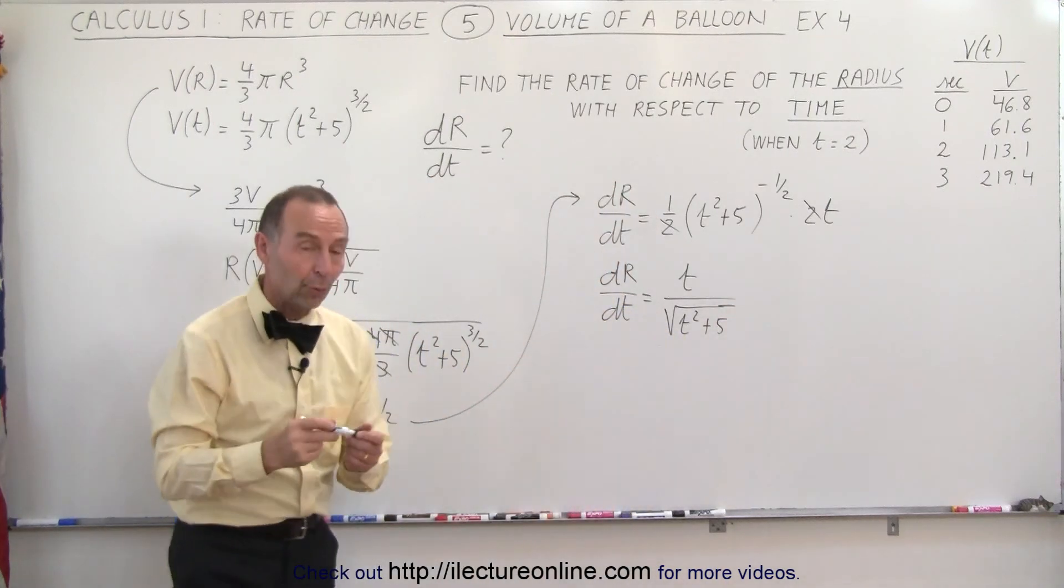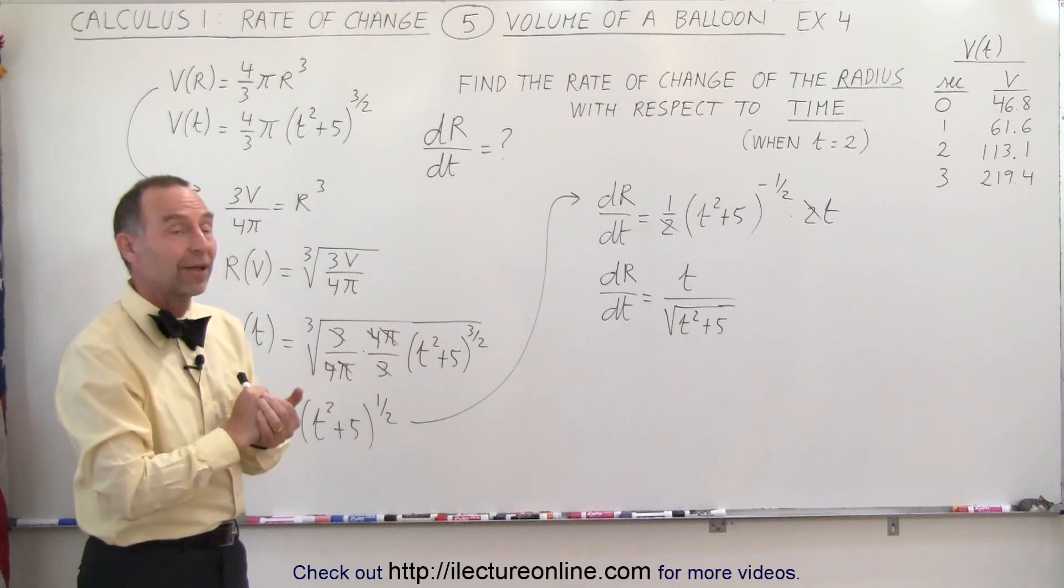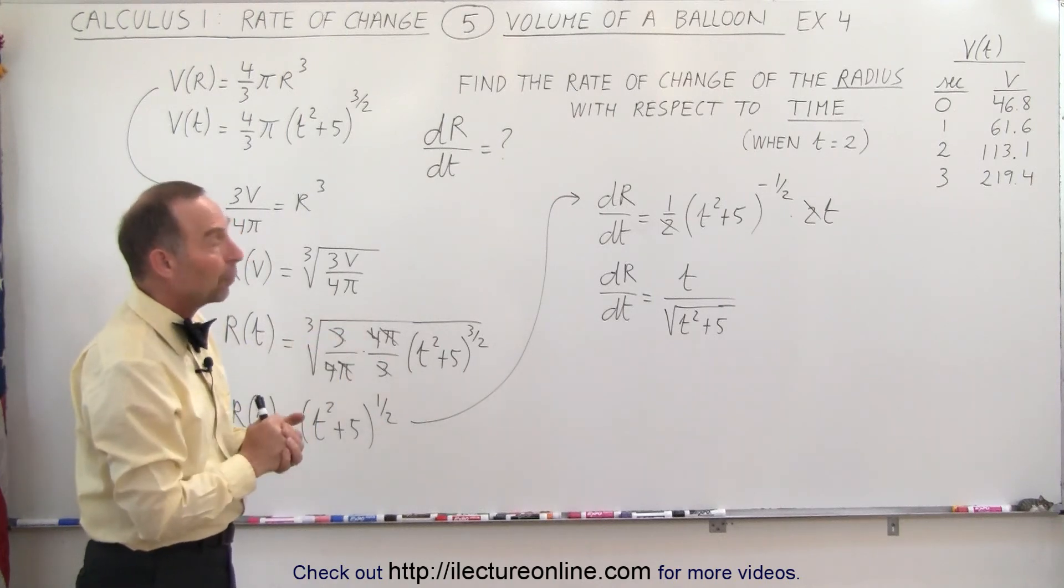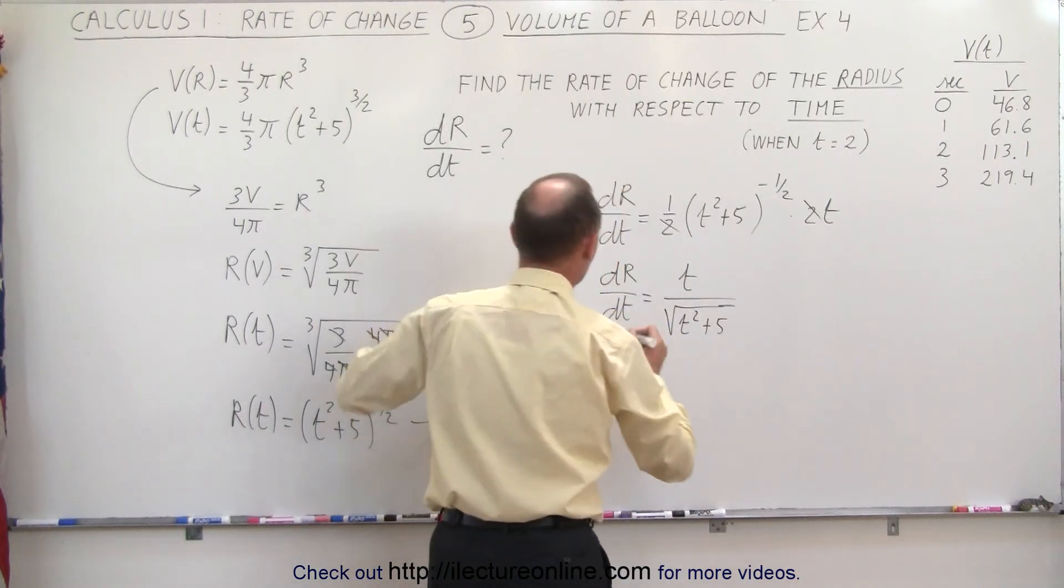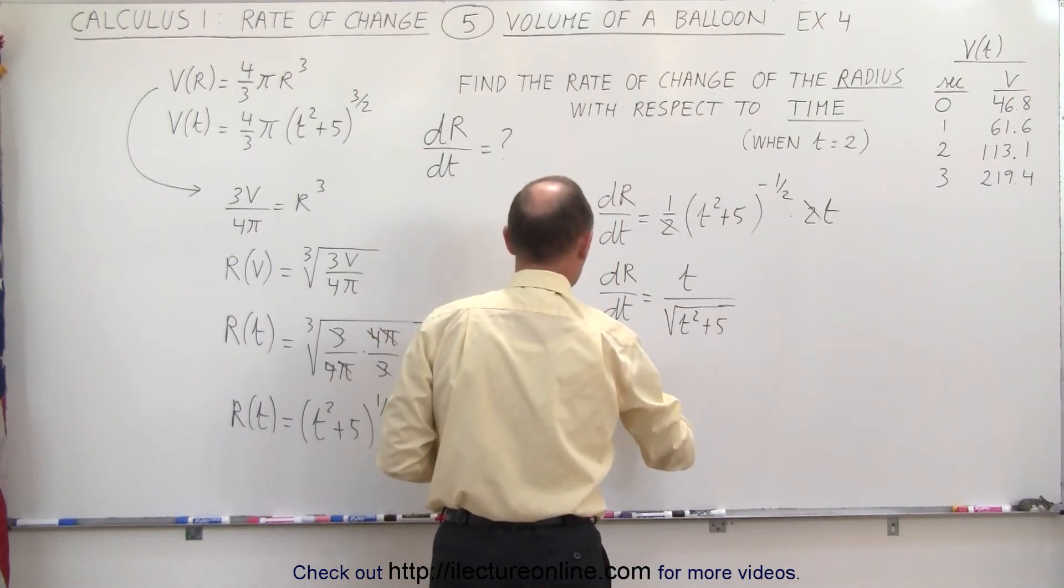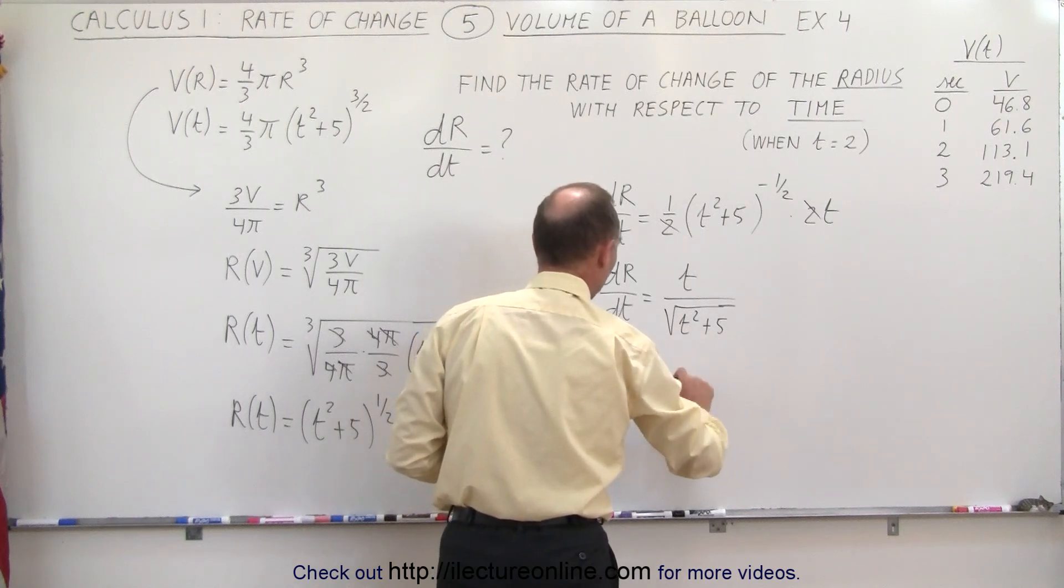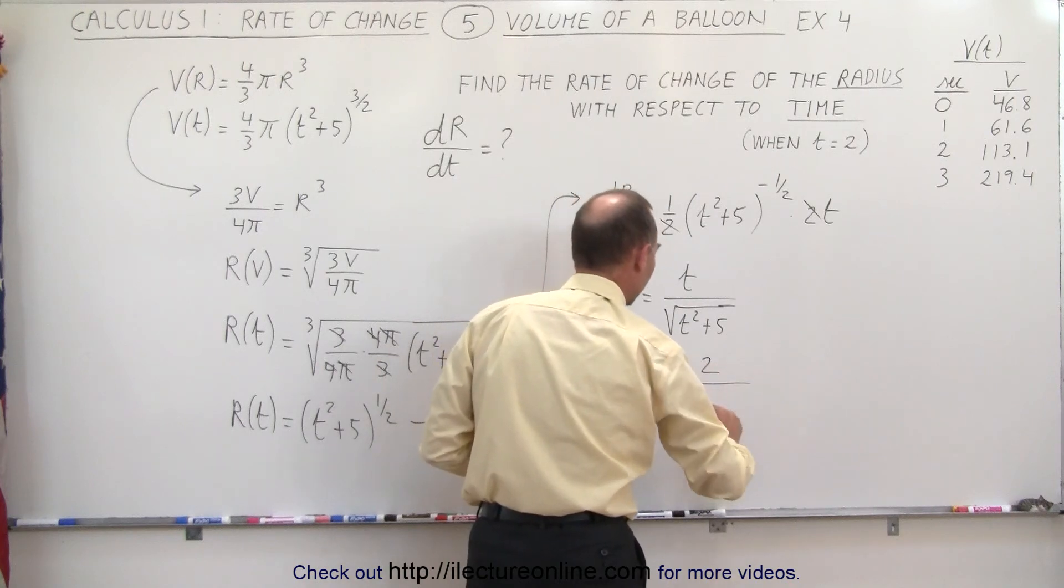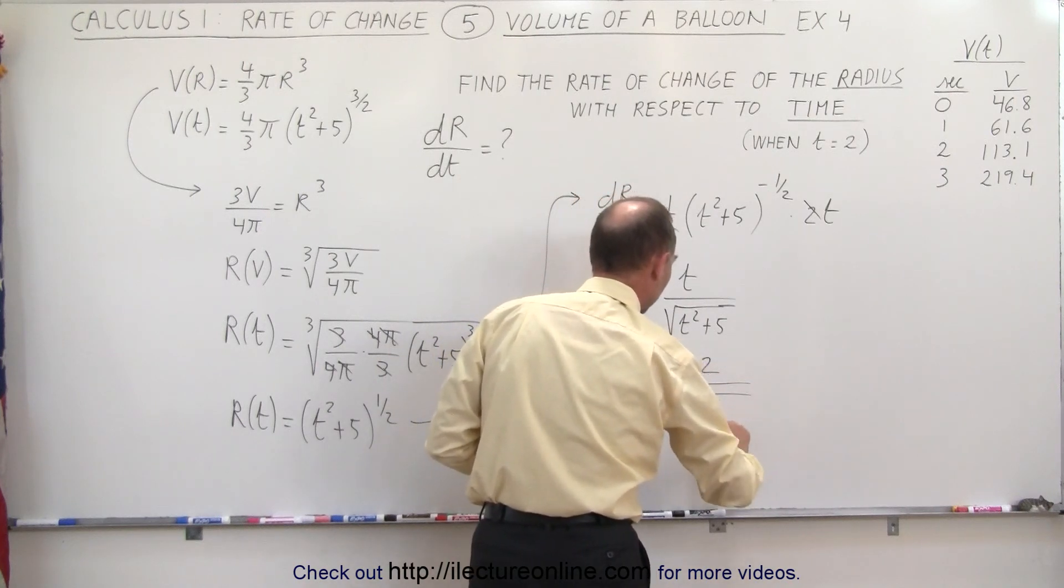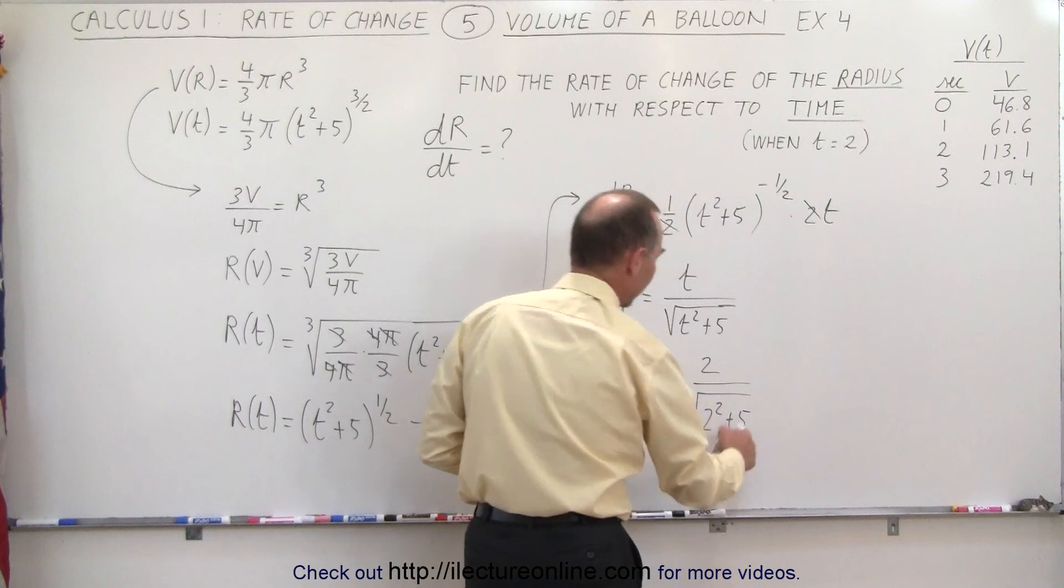So now, we have the rate of change of the radius with respect to time as a function. Now, we can evaluate that function when t is equal to 2. So we can say here that dr/dt, when t is equal to 2, is equal to, and now we replace every t with a 2.